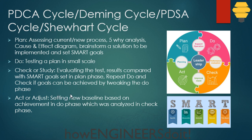Once we set a new baseline, anything below that number is considered non-OTD or non-FTR — below the target. If we need to improve again, we go through all of these phases again. This is a basic understanding of the Plan-Do-Check-Act cycle. Thank you so much and stay tuned.